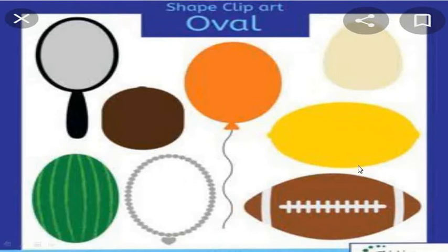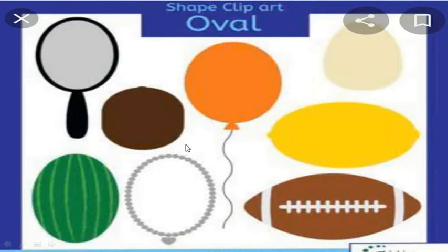Look at this. What are all these things? This is a balloon, the favorite of all of you. Baseball. Muskmelon. A necklace — girl's favorite. This is watermelon. What is the similarity in all these things? As we are learning about shapes, they all are in the shape of oval. O-V-A-L, oval.